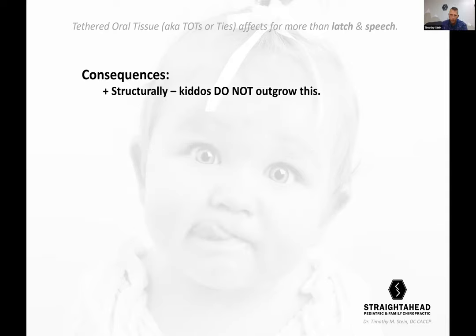Consequences structurally: kids don't outgrow this. If there's a true tongue tie and there's not a revision or adequate chiropractic care, kids don't outgrow it. It's not something that goes away. The tendon and fascia don't stretch over time, don't wear out, don't elongate — they stay taut. As the child continues to grow, that tendon, which doesn't grow with them, becomes more and more taut and can possibly have greater consequences.